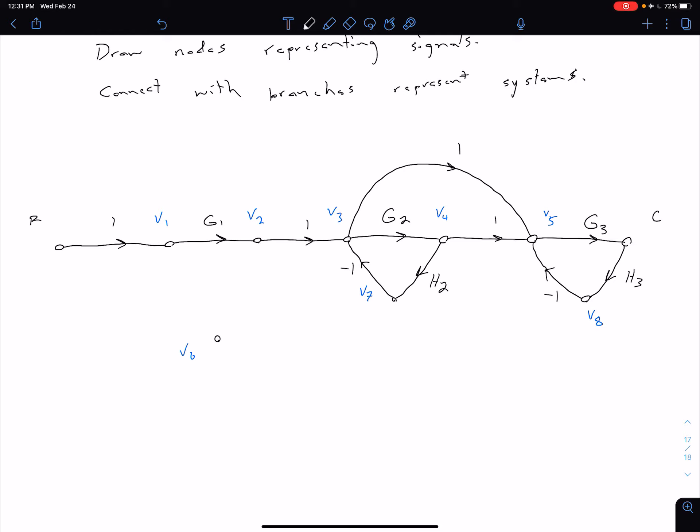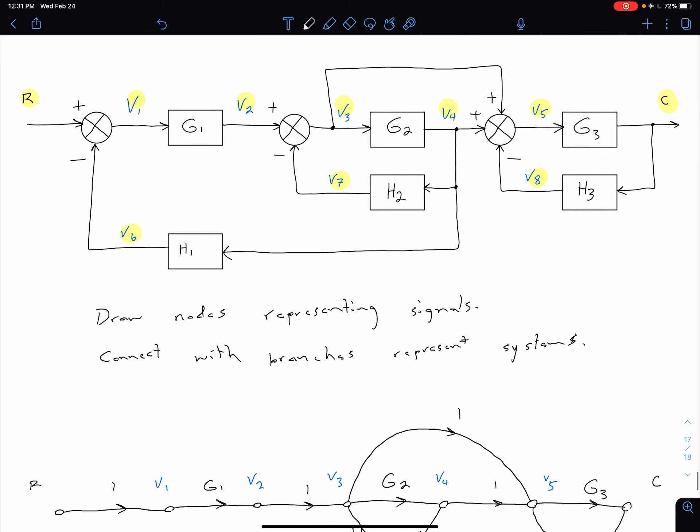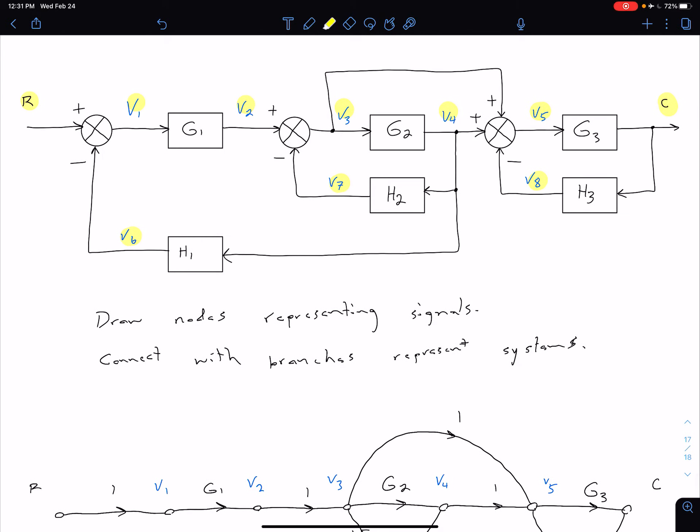And then finally, for our feedback loop with H1, on one side, we have V4. So to go from V4 to V6, we multiply by H1.